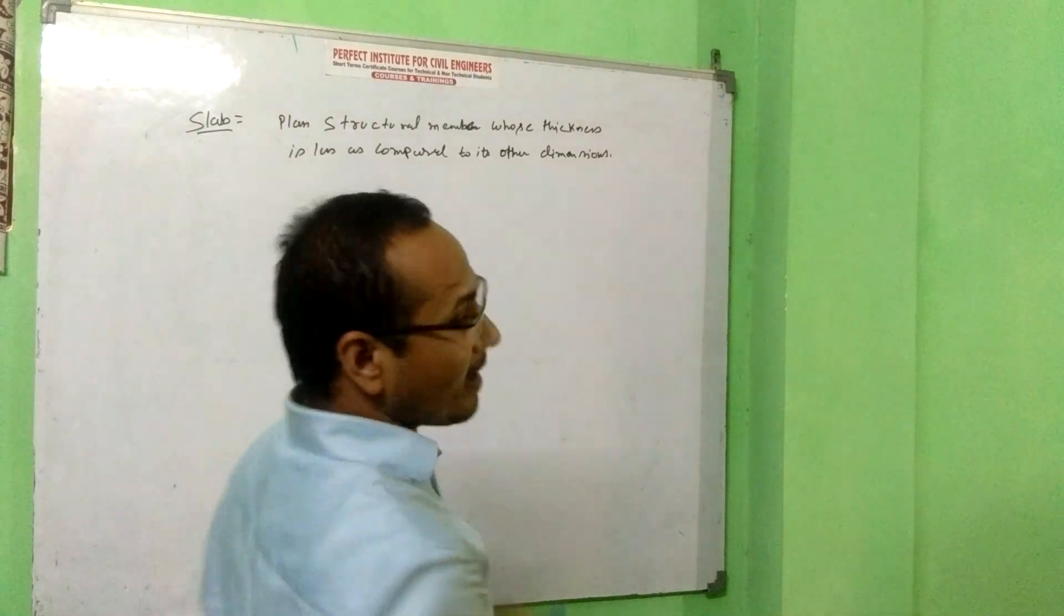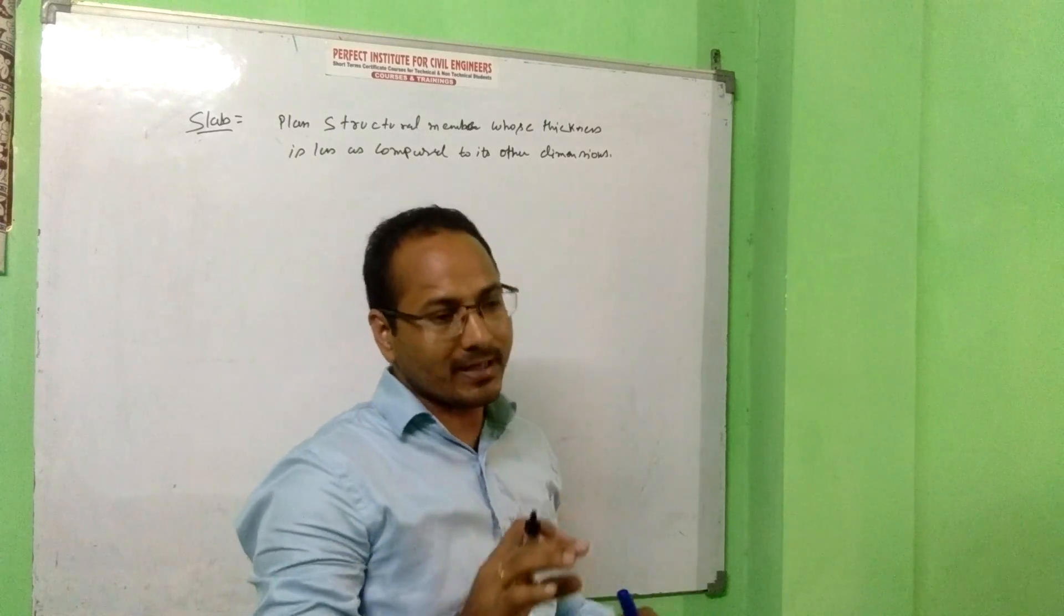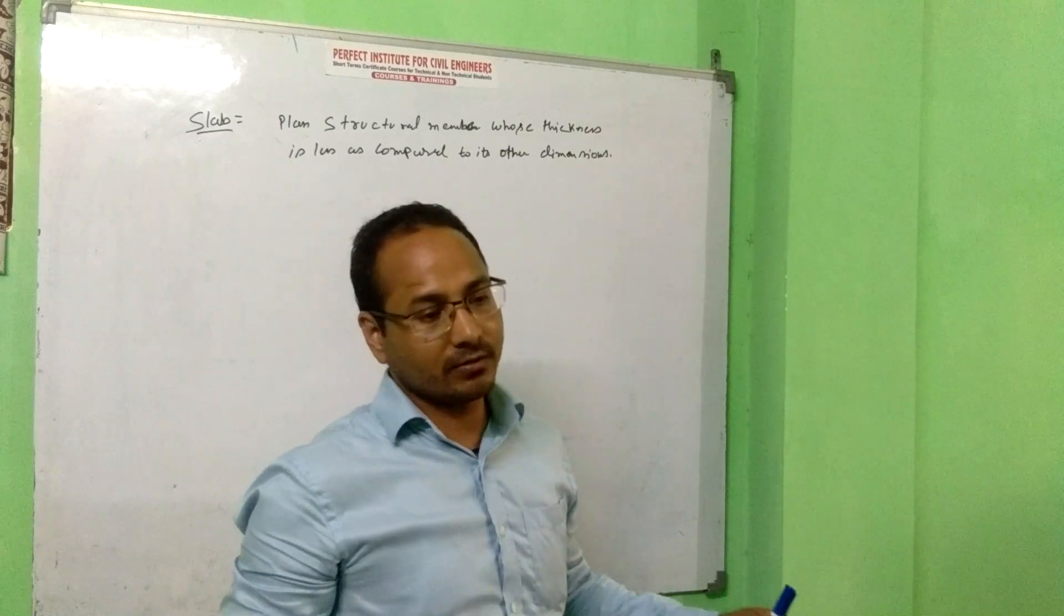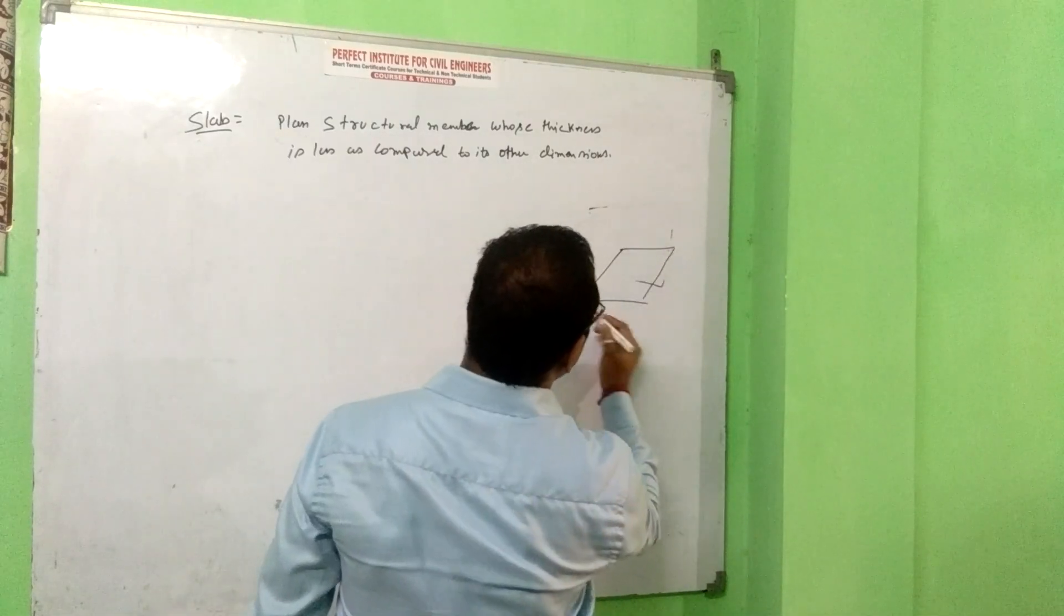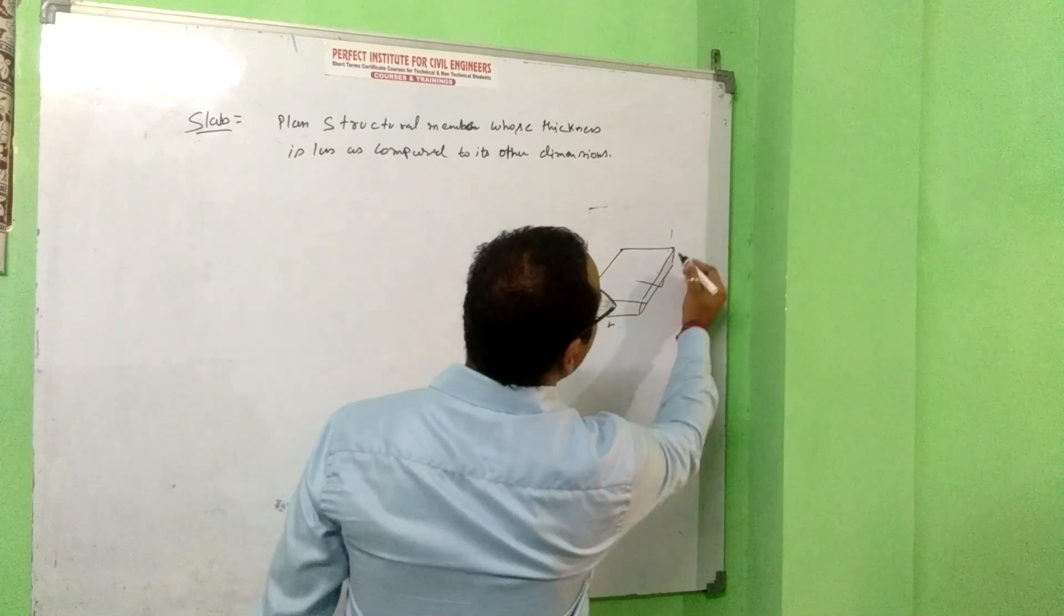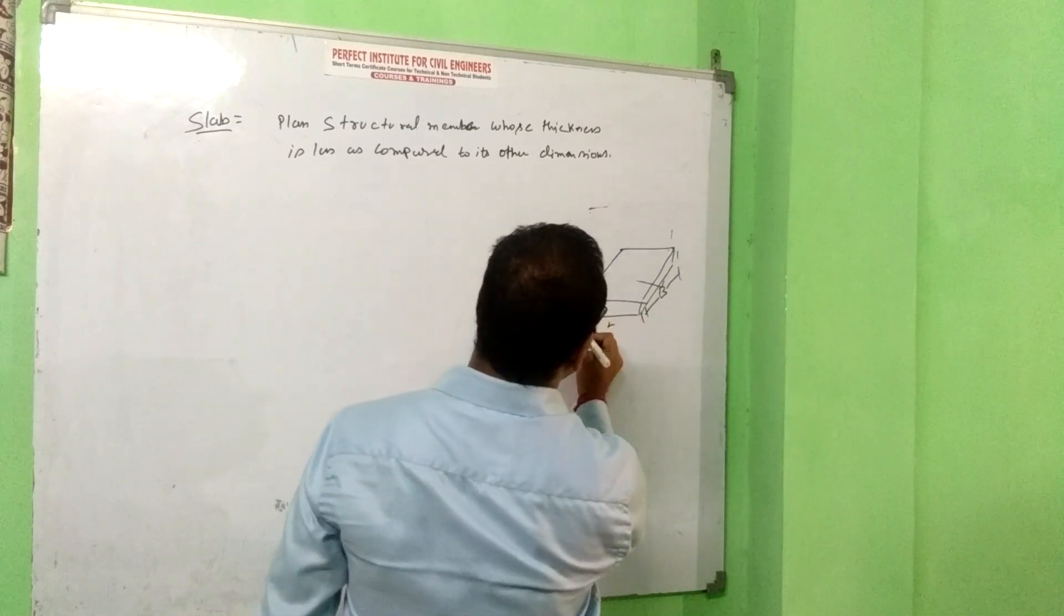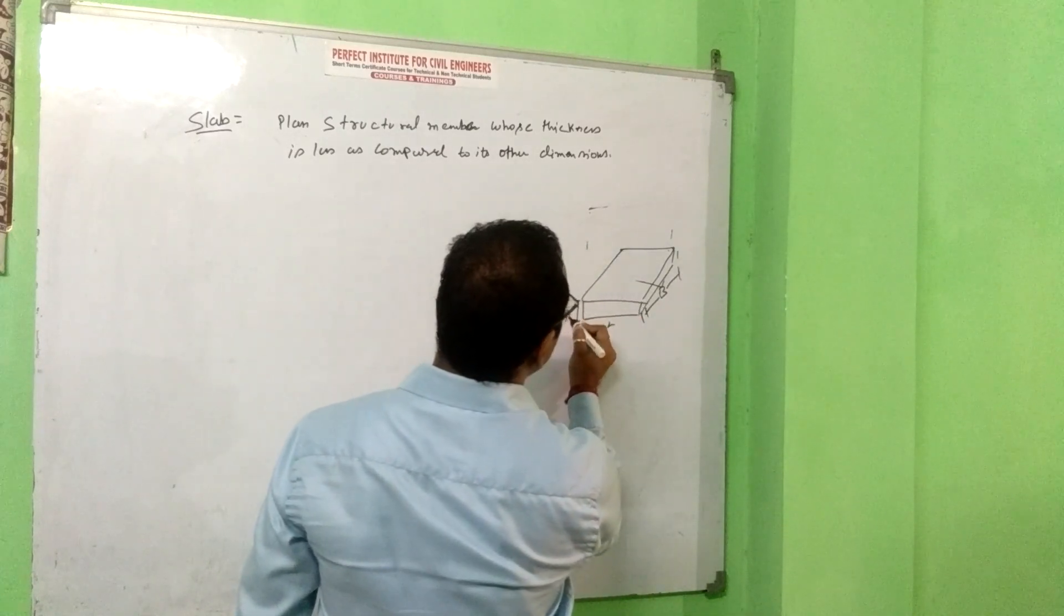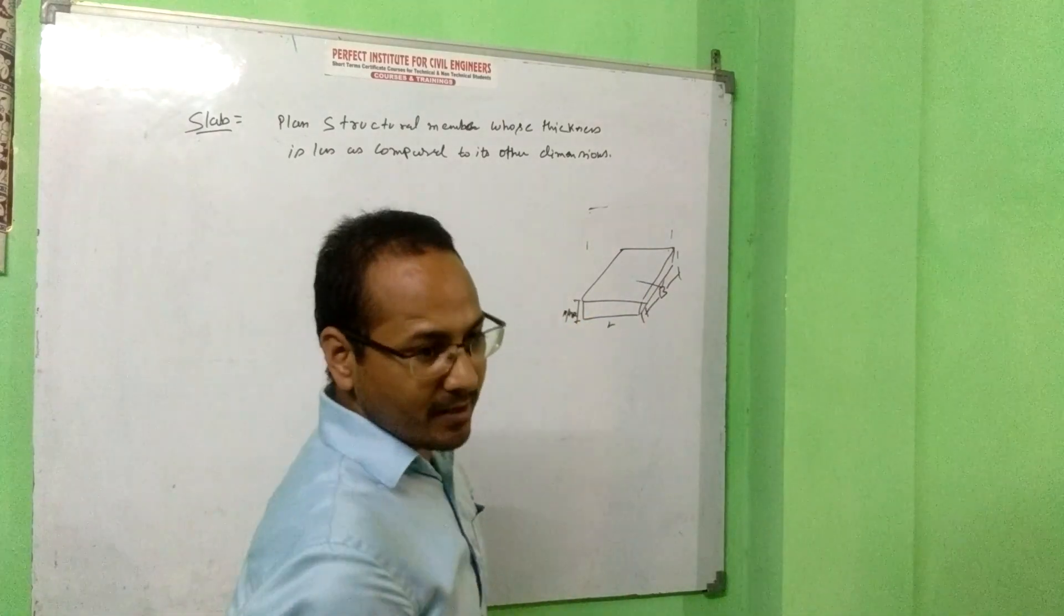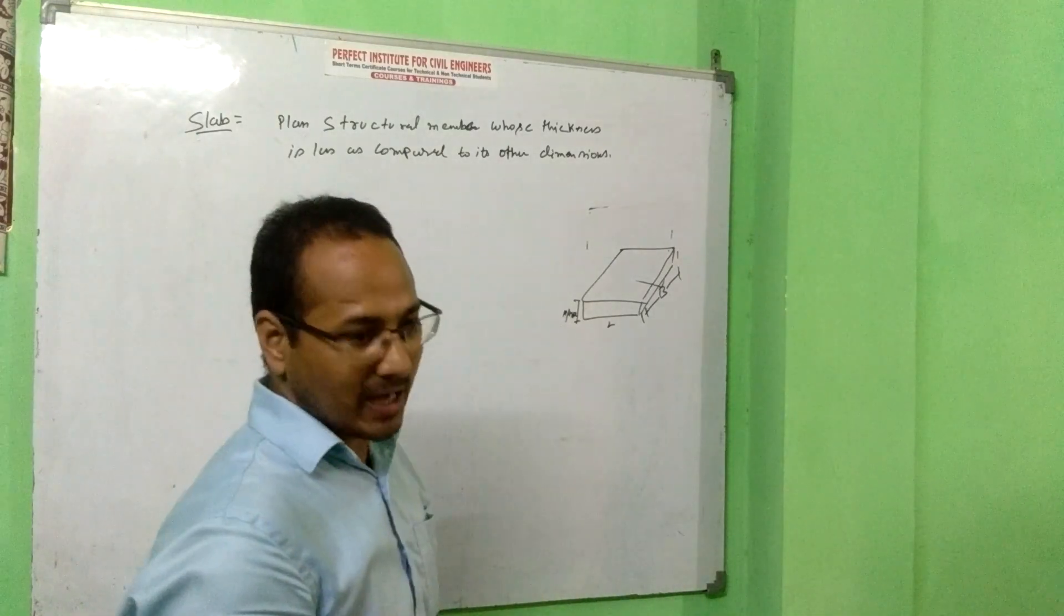Matlab ki structural plane member jiski thickness hai is less as compared to other dimension. Other dimension means length, width, or thickness. So whose thickness is less than the other structural member's dimension, that is called slab.